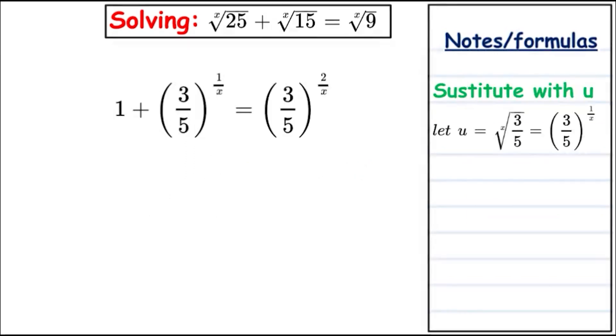As we have a consistent number in the expression, we can utilize a substitution. We're going to let u equal the x root of 3 over 5. It can be written in two different forms. Let's replace it and we'll get 1 plus u is equal to u squared.